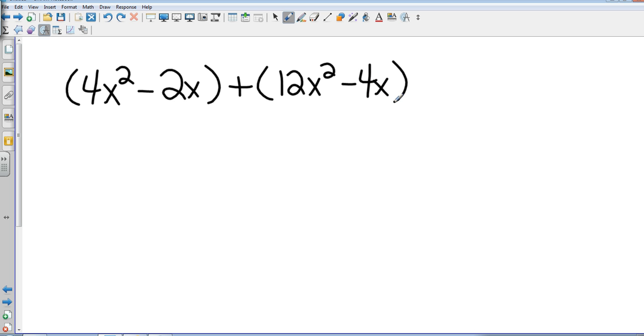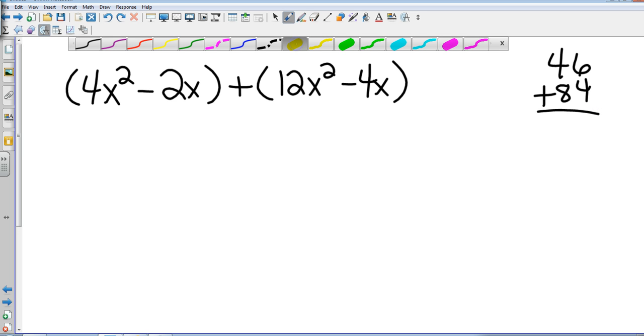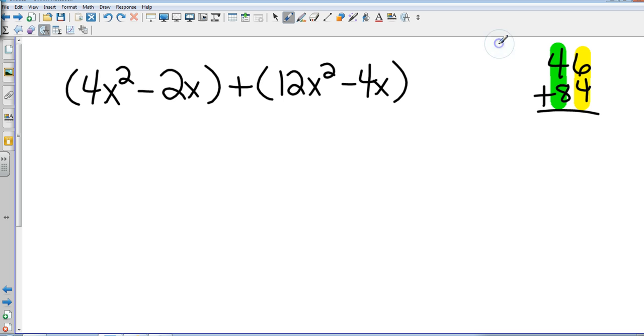So here we have some two term polynomials which makes them binomials. A couple of different ways we can do this. When we used to add terms, let's say 46 and 84, we lined up the ones column and we lined up the tens column. OK we can do that same thing here. And we can line up our x squareds and then we can line up our x's.